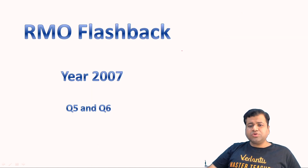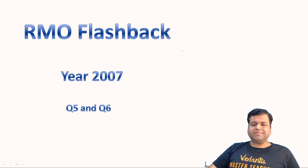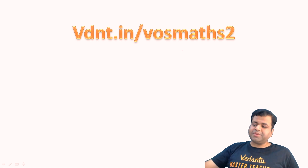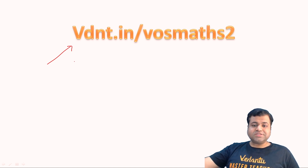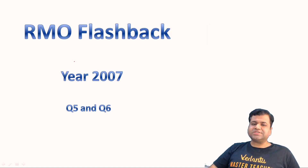These two questions from 2007 were easy — the first used only Pythagoras theorem and the second used approximation. If you are a Math Olympiad enthusiast and want to prepare, please fill up the Google form to get enrolled in our free batches. We'll meet in the next session where we discuss the first two questions. Take good care of yourself. Thank you. Bye-bye.